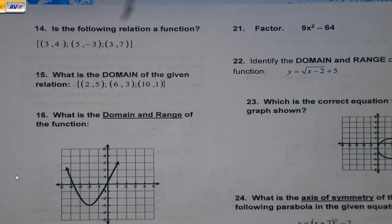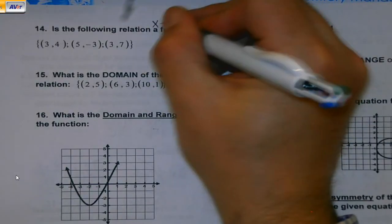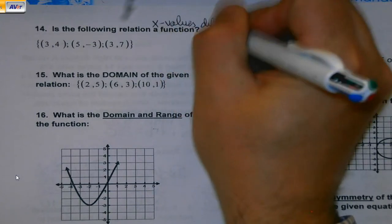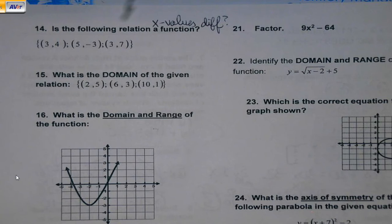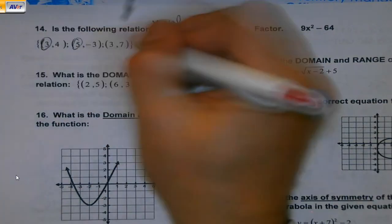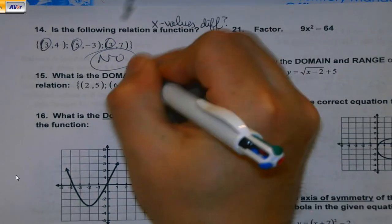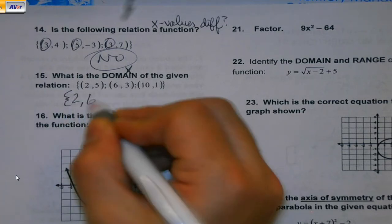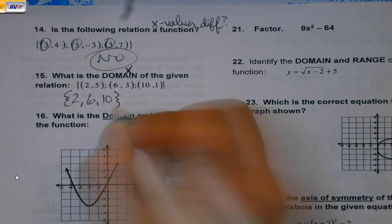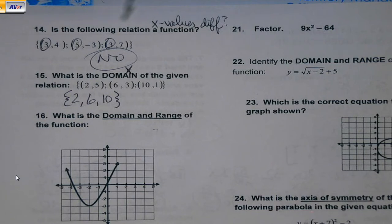Is the following relation a function? When I look at this, are the x values different is really the question. x values, are they all different? Nope. If they're all different, the x values, then it's yes. What's the domain of the given relation? Domain is my x values. I'm just going to list them. It's not interval notation. Don't put 2 to 10 in parentheses or brackets. Individual values. And if you are asked for range, that would be the y values.